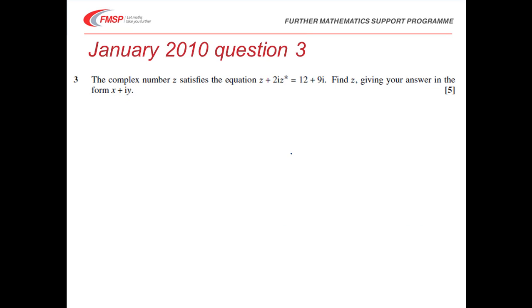So if we start by looking through the question, it says that we have a complex number z, which satisfies the equation z plus 2i z with this little asterisk. Now, that is the conjugate of z.